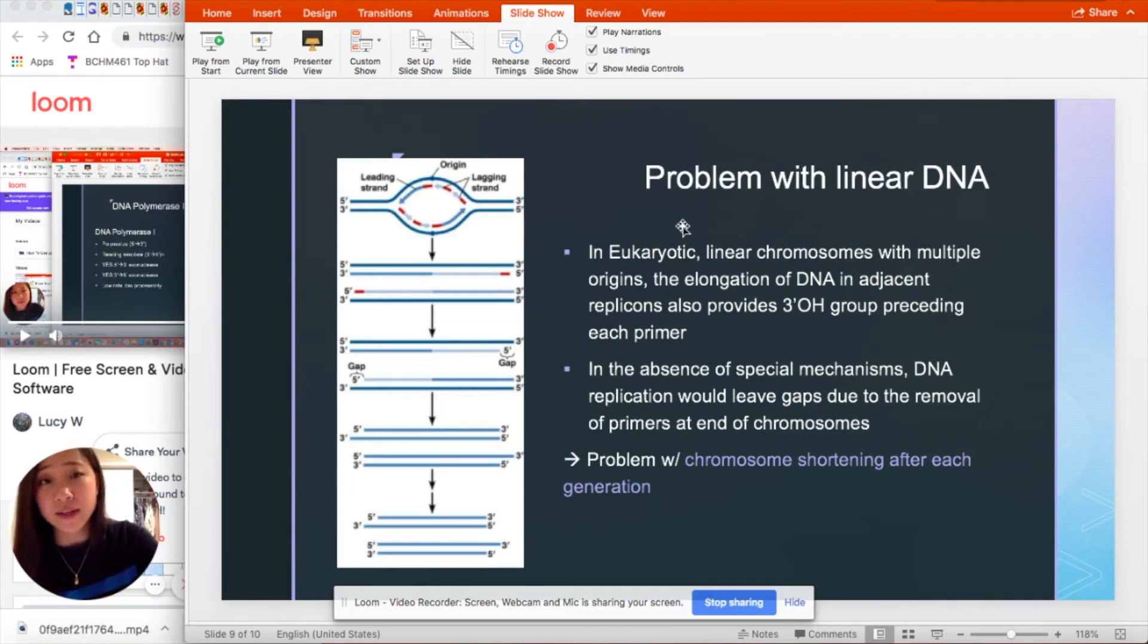In the absence of special mechanisms, DNA replication would leave gaps due to the removal of primers at the end of the chromosome. So if we look at the newly synthesized pieces of DNA, at the five prime end, we have our primer.